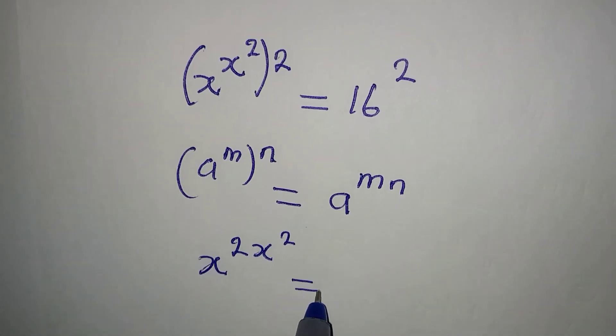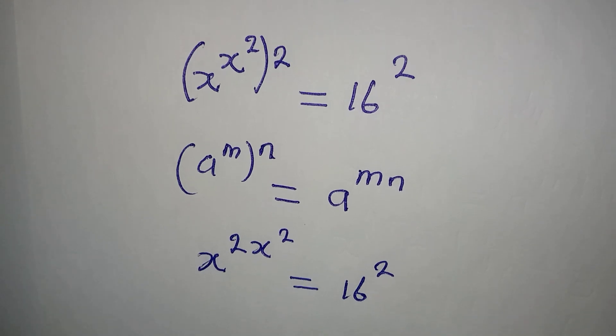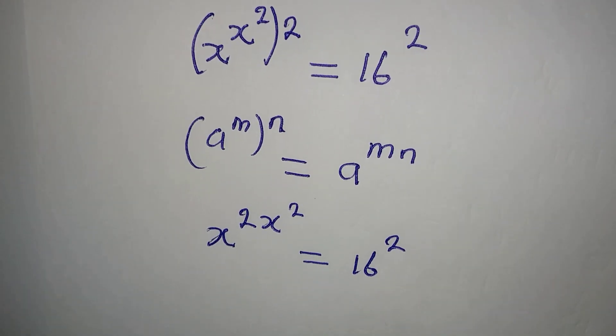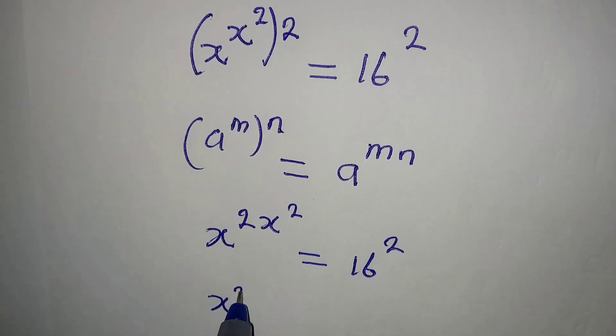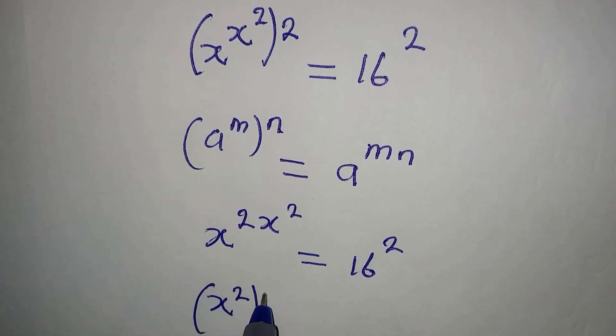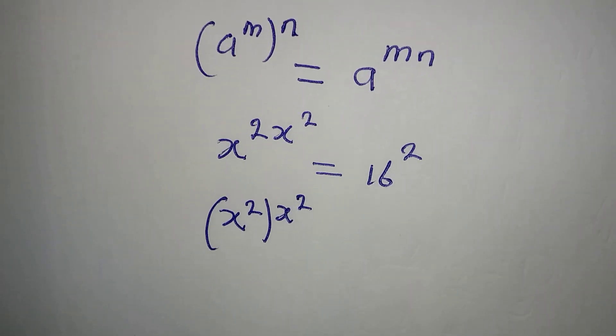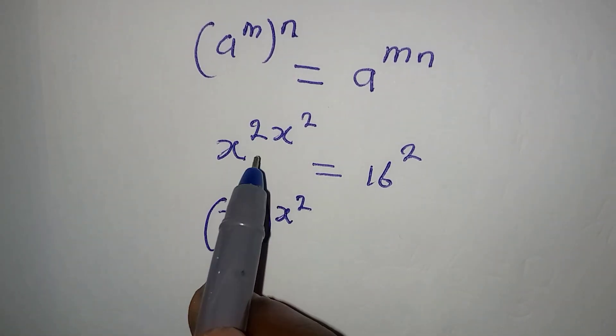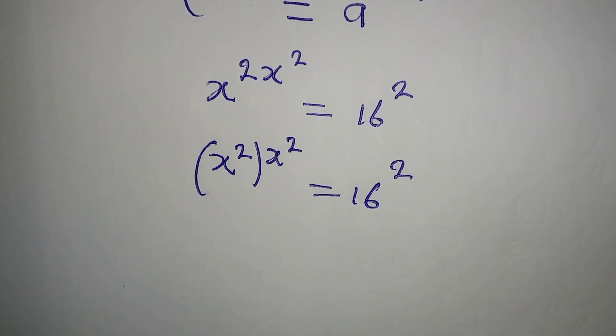We get x to the power of 2x squared which will be equal to 16 to the power of 2. Now from here, can I split this into 2? Yes, because I can have x squared then I have x squared again as the other power.